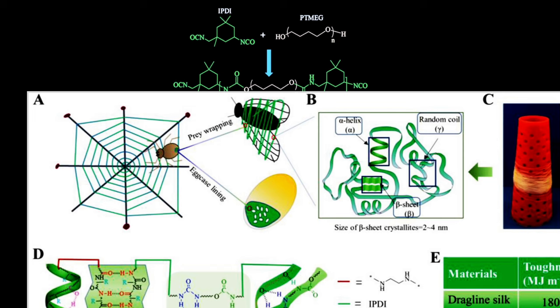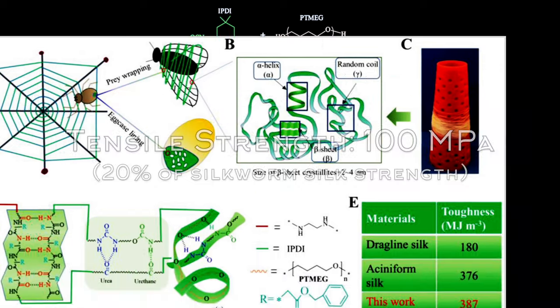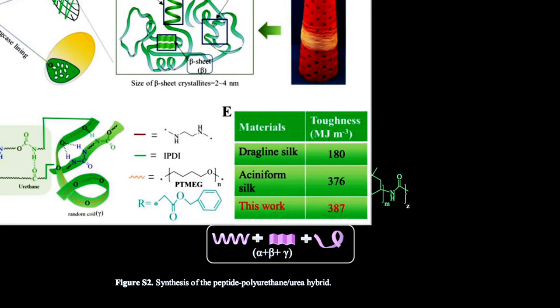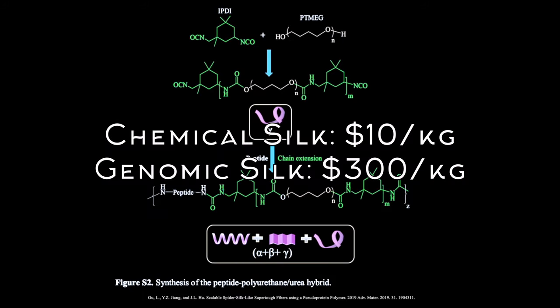One of the resulting polymers had a tensile strength of just 100 MPa, but the toughness was 387 megajoules per meter cubed, higher than that of both dragline and aciniform silk. The researchers estimate this pseudoprotein polymer would cost just $10 per kilogram, compared to genetically engineered spider silk being estimated at $300 per kilogram.